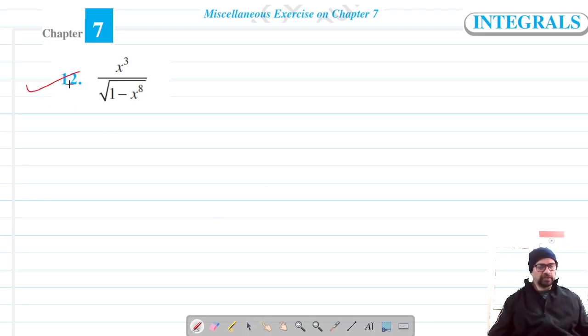Welcome to Pratham Science Academy classes and we are on to question number 12 of miscellaneous exercise on chapter 7. I can write it as integral I equals integration of x cubed over square root of 1 minus x raised power 8 into dx.